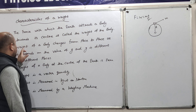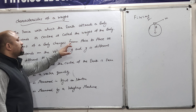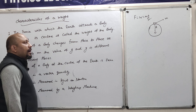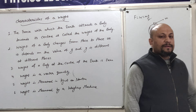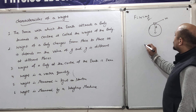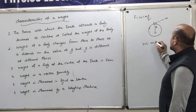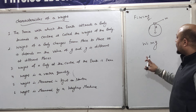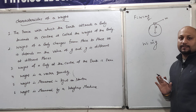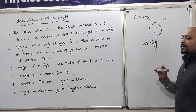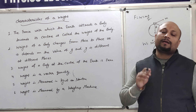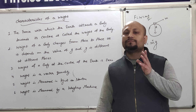Second property: weight of a body changes from place to place, as it depends on the value of g. Weight equals M into g. The mass will not change — it remains fixed. But gravity will be different on different planets. If we go to different planets, the g value will change.